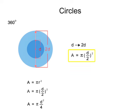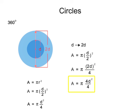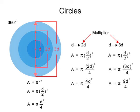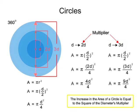By substituting 2 times D in for the diameter, we can see that when the diameter of a circle is doubled, its area is quadrupled. This is because both the old diameter and its multiplier, 2, are being squared. Similarly, if we triple the diameter, the multiplier becomes 3 and the new area will be 9 times larger. In general, an increase in the diameter of a circle will result in an increase in the area equivalent to the multiplier squared.